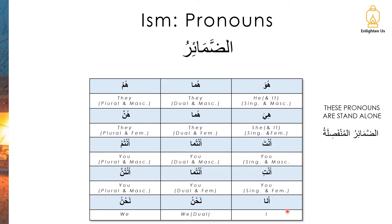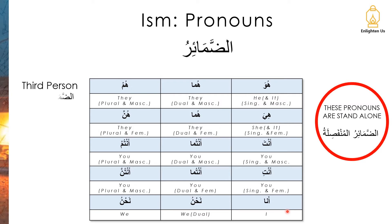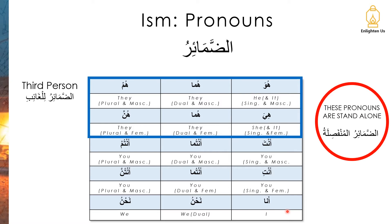This set we refer to as standalone — الضمائر المنفصلة. المنفصلة means separate. The first and second rows are for your third person, and they are termed الضمائر للغائب. The literal translation of غائب is absent, so these are pronouns for the one that is absent.